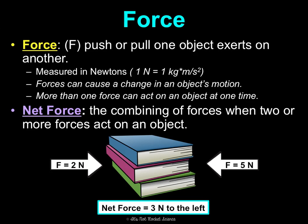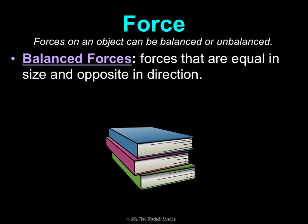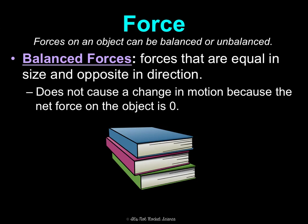When forces act on an object, they can be balanced or unbalanced. Balanced forces are equal in size and opposite in direction, so they would not cause a change in motion because the net force would be zero. For example, if I'm pushing with four newtons to the right and someone else is pushing with four newtons to the left, they cancel out, the net force is zero newtons, and the stack of books would not move.